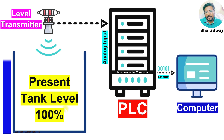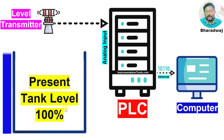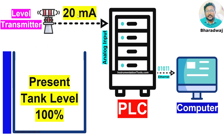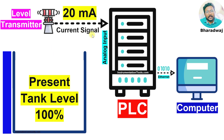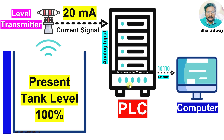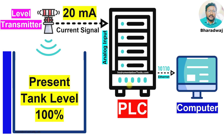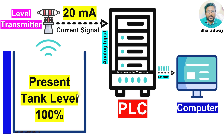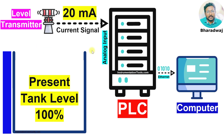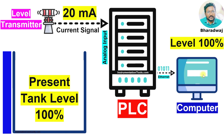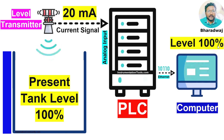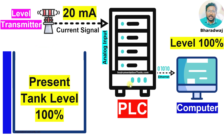When the tank level is 100%, the transmitter sends 20 mA — the maximum current value — to the PLC. The PLC calculates the tank level based on the received current signal and updates the tank level value on the graphics to 100%.